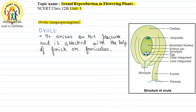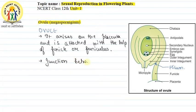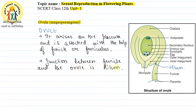Where the funicle is attached to the ovule, that point is called hilum. So what is hilum? The hilum is the junction between the funicle and the ovule. This appears as a scar — you can see it in the seed. You can see it in the red bean, in the rajma — it appears as a white-coloured scar. That is the hilum.